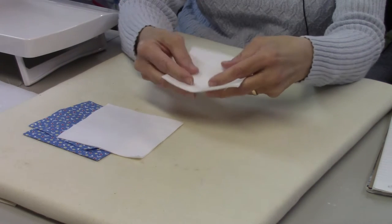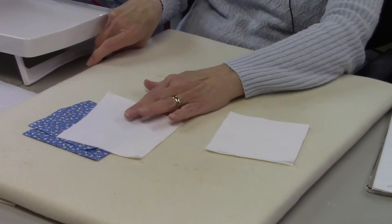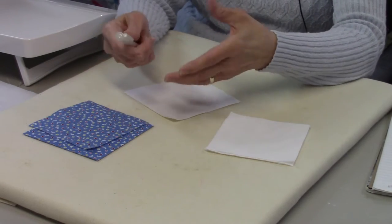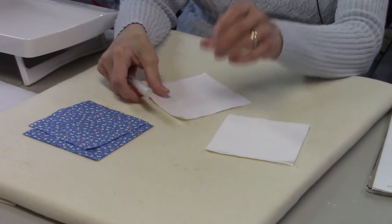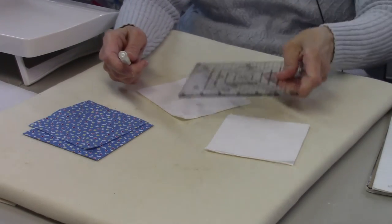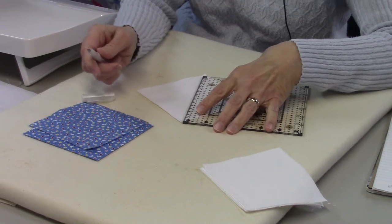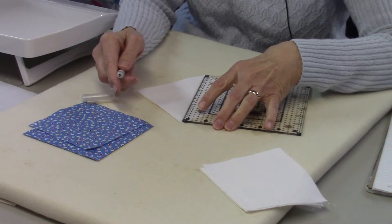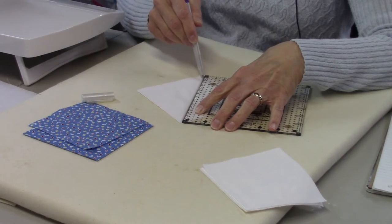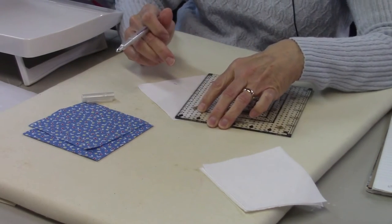We're going to do the half-square triangle method. I have an air-soluble pen and a ruler, and I'm going to mark my diagonal line on the wrong side of each one of my four and seven-eighths inch squares. This is my sewing guideline and a cutting guideline.